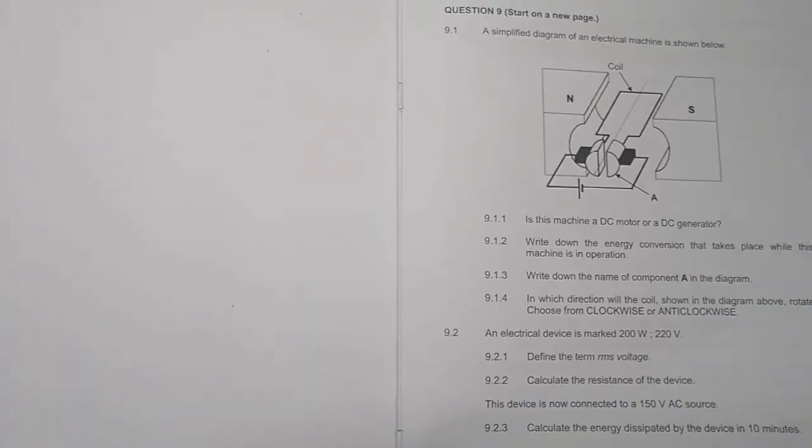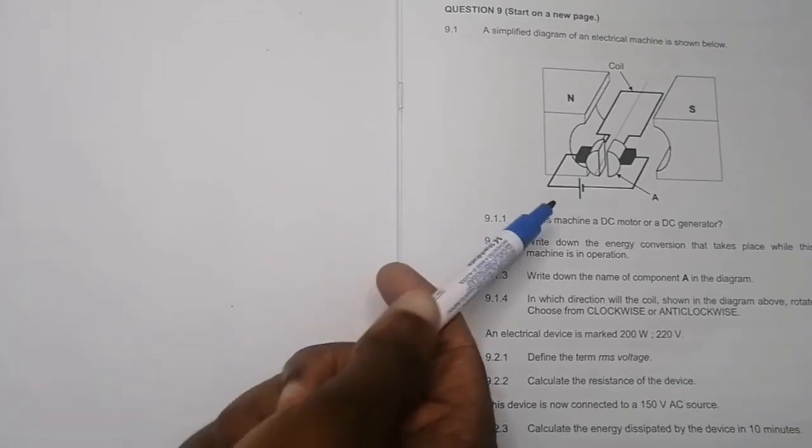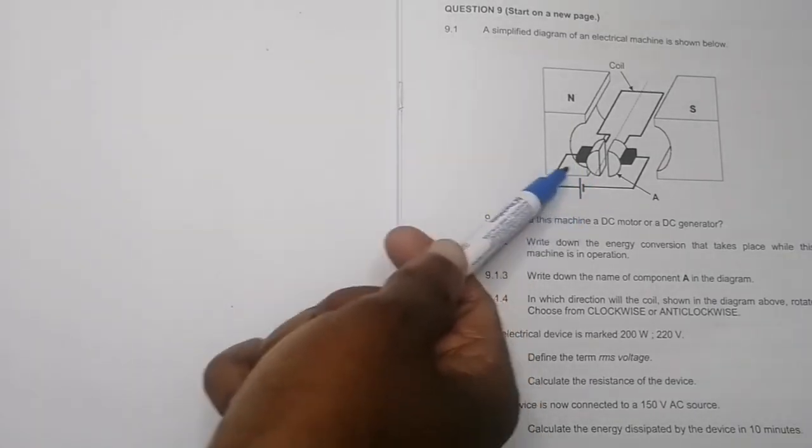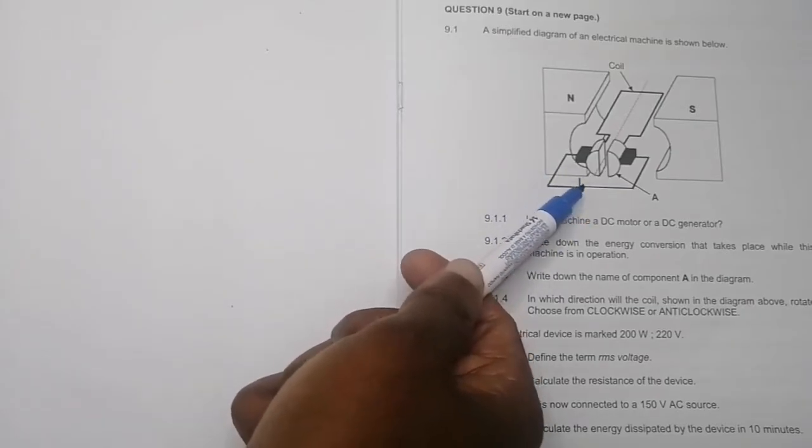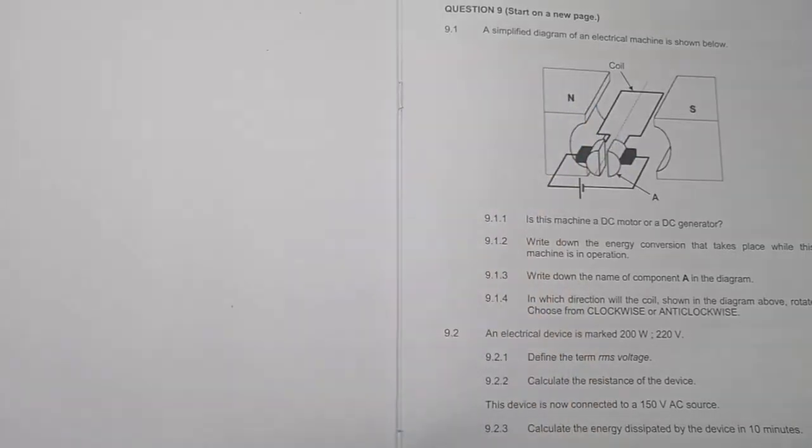Without any further ado, let's get going with this question. This is an easy section on electrodynamics. A simplified diagram of an electrical machine is shown below. They're asking is this electrical machine a DC motor or a DC generator? We've got a battery there that is connected, so this is telling us that we are converting electrical energy to mechanical energy, so definitely that should be a motor.